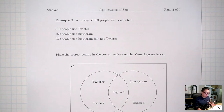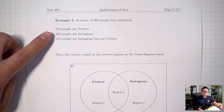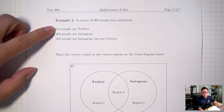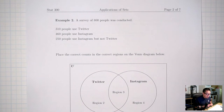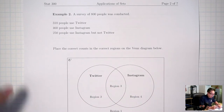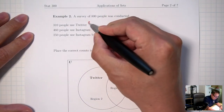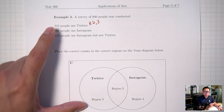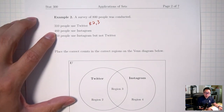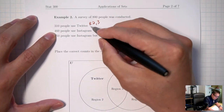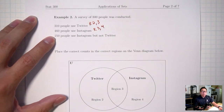Example 2. We have a survey of 800 people: 310 use Twitter, 460 use Instagram, and 250 use Instagram but not Twitter. Just like in example 1, I'll go through and figure out which region each clue covers. 310 people use Twitter — inside Twitter is regions 2 and 3, so 310 represents regions 2 and 3. 460 use Instagram — that's regions 3 and 4. And 250 use Instagram but not Twitter — that's just region 4.